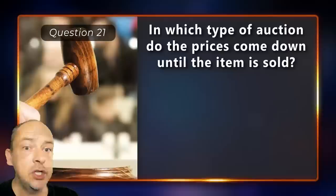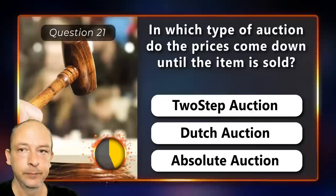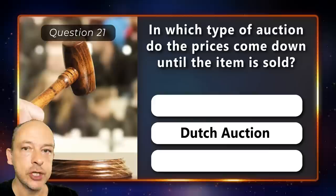In which type of auction do the prices come down until the item is sold — two-step, Dutch, or an absolute auction? In a Dutch auction.